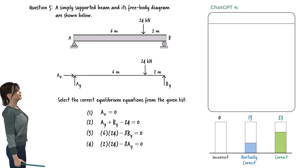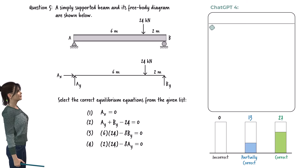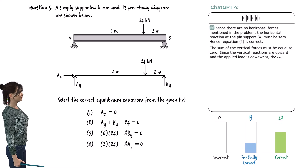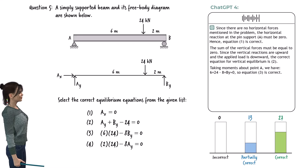Consider this simply supported beam and its free body diagram. Given equations 1 through 4, select the correct equilibrium conditions for the beam. Since there are no horizontal forces mentioned in the problem, the horizontal reaction at pin support A must be 0 — hence equation 1 is correct. The sum of vertical forces must equal 0; since vertical reactions are upward and the applied load is downward, the correct equation for vertical equilibrium is equation 2. Taking moments about point A: 6 times 24 minus 8 times BY equals 0, so equation 3 is correct. Equation 4 does not correspond to any equilibrium condition in this problem, so it is incorrect.